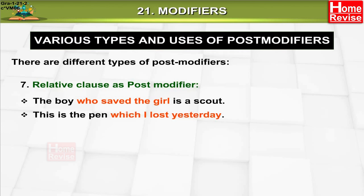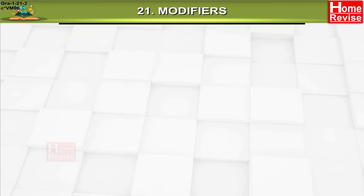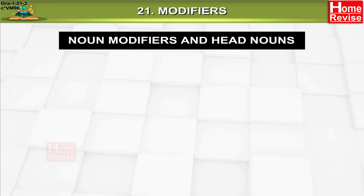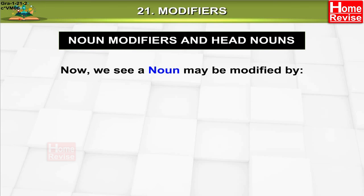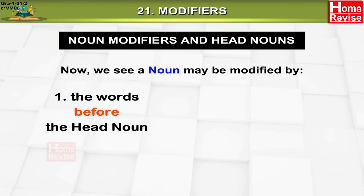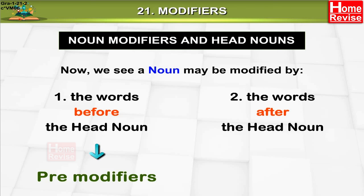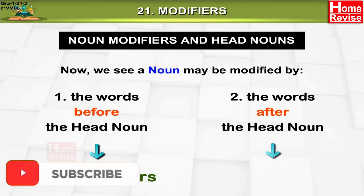'This is the pen which I lost yesterday.' Noun modifiers and head nouns. A noun may be modified by: one, the words before the head noun — pre-modifiers; two, the words after the head noun — post-modifiers.